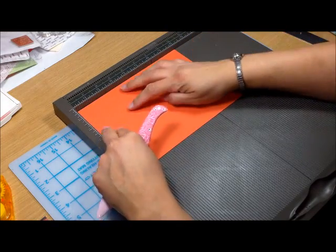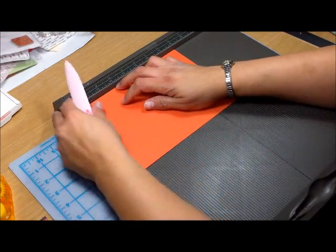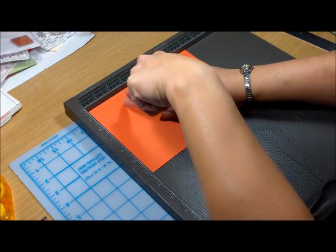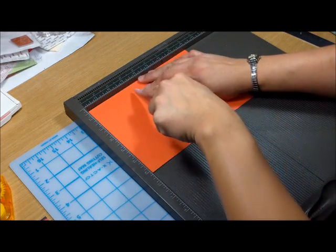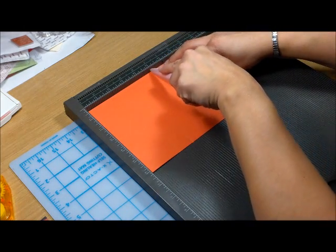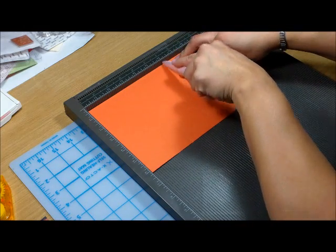This is the base of the card. So first, on the long side, we're going to score it at 2 inches, 3 inches, 5 inches, and 6 inches.